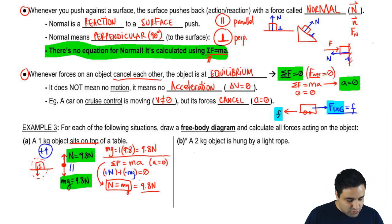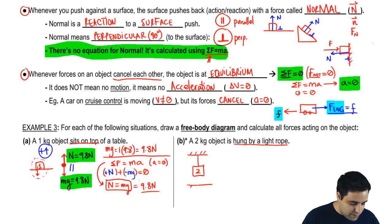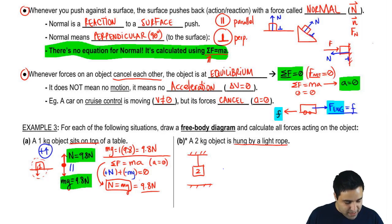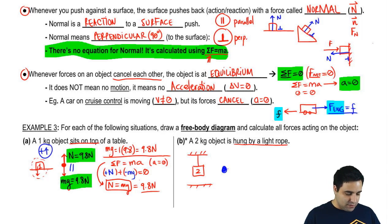For a 2-kilogram object hung by a light rope from the ceiling, pause and draw the free body diagram and find all forces on the object.